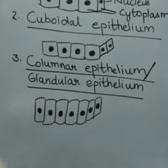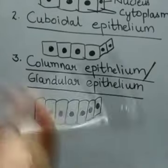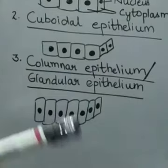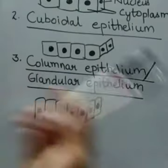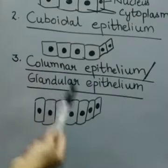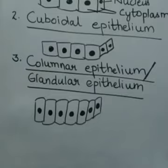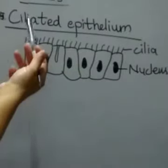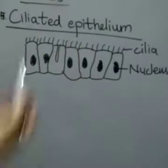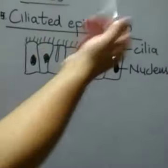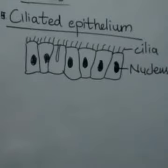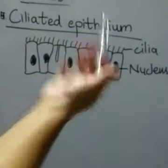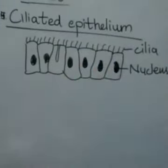Glandular epithelium is formed when the columnar epithelium is modified to form glands that secrete chemicals. Then comes ciliated epithelium: certain cuboidal or columnar cells have a free border which bears thread-like cytoplasmic outgrowths called cilia.